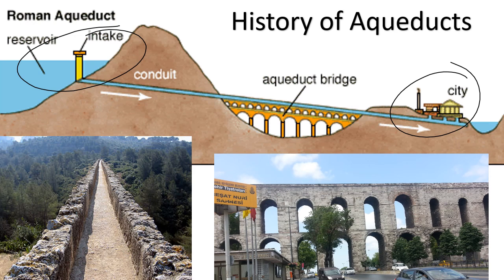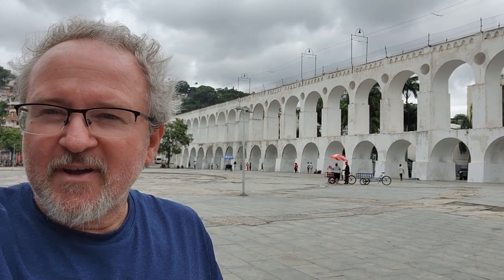A lot of the Roman aqueducts can still be found around Europe to this day. They're not used anymore to transport water, but you can see this one right here — it looks like a big fancy bridge, but it's really a channel for water on the top to flow into the city. Here in Rio de Janeiro, what you see behind me is an example of an aqueduct. At the top of that structure there was a channel or duct that transported water from way out in the country, where the water was clean, and let it flow downhill into the city.